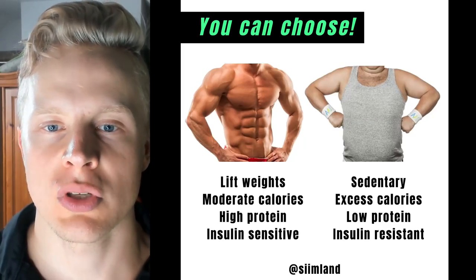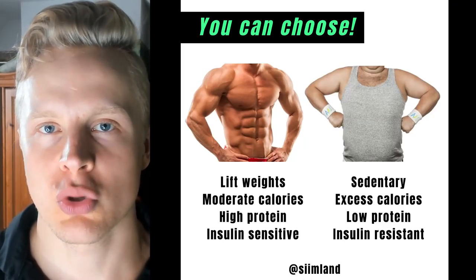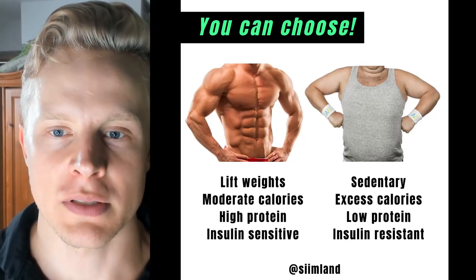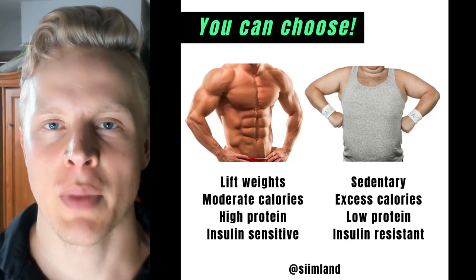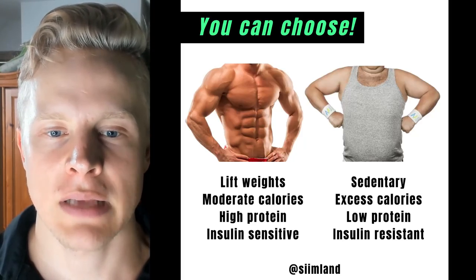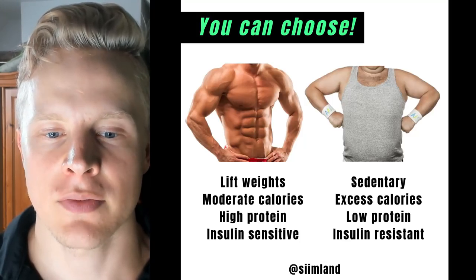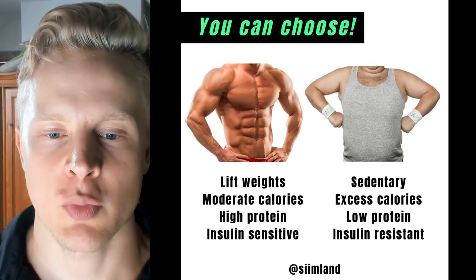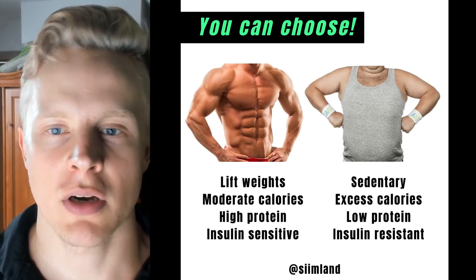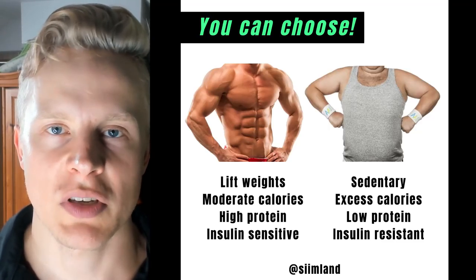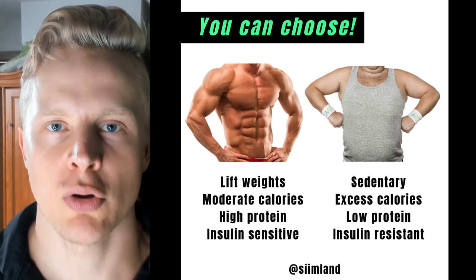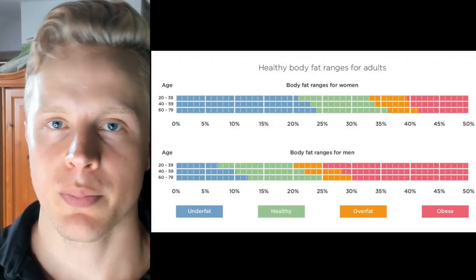At the end of the day, you can choose what kind of body you have and how the food you eat affects your body composition. The signals that help with lean muscle mass and less body fat are lifting weights, exercising regularly, being insulin sensitive, eating a slightly higher protein intake, and being moderate with your calories. The signals that promote fat storage instead of muscle growth are being sedentary, not exercising, eating excess calories, being low in protein, and thus becoming insulin resistant — which prevents your body from utilizing nutrients effectively.